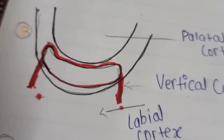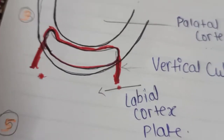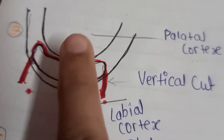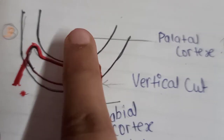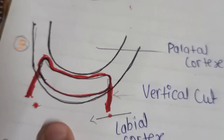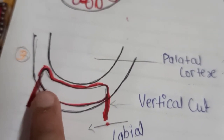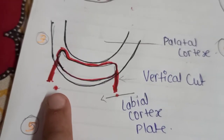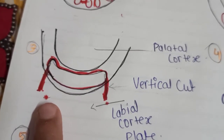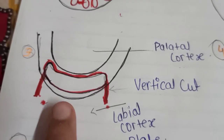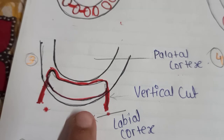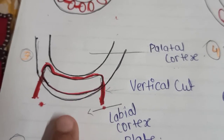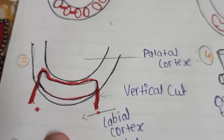After removing the interdental bone, we have to give the vertical cut. You can see — this is the labial cortex and this is the palatal cortex plate. We give the vertical cut in the labial cortex direction using a bur.